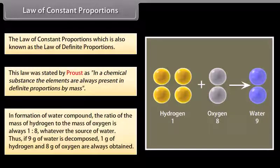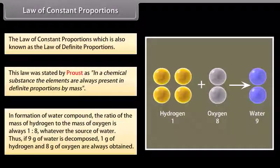In formation of water compound, the ratio of the mass of hydrogen to the mass of oxygen is always 1 is to 8, whatever the source of water. Thus, if 9 grams of water is decomposed, 1 gram of hydrogen and 8 grams of oxygen are always obtained.